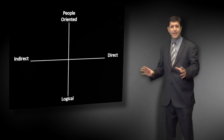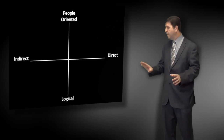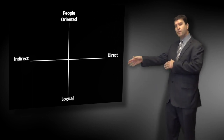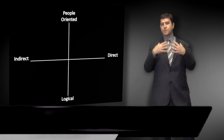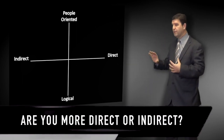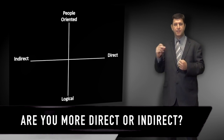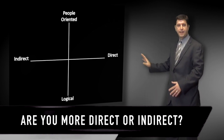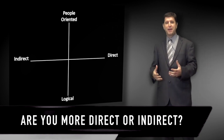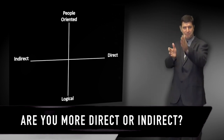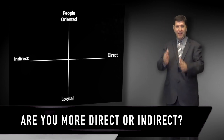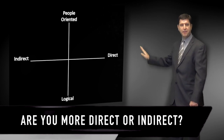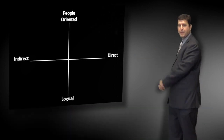I always ask people to assess themselves on that horizontal line — are you more of an indirect person, cautious and slower to action, or more of a direct person, spontaneous, let's get things done fast? For me personally, I'm more on the direct side. I tend to be a ready-fire-aim kind of person — shoot first and figure out where you're at along the way. So I'm probably about midway through on the direct side.